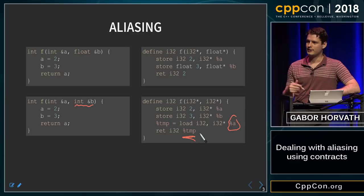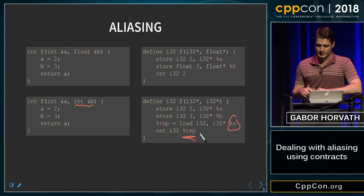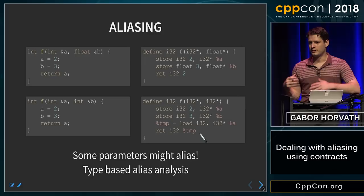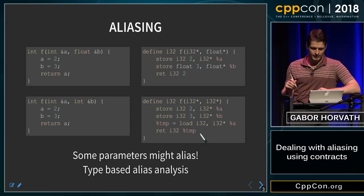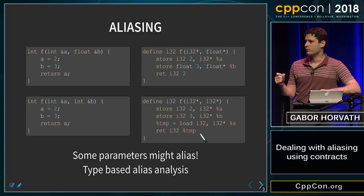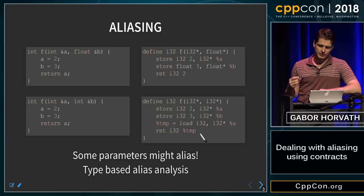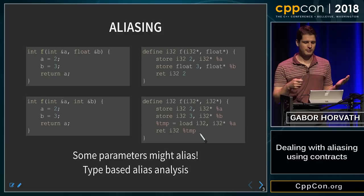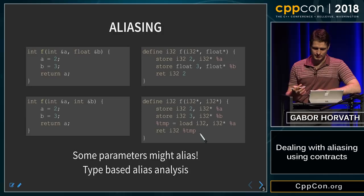There is one more memory operation here. The reason is that the code the compiler generates has to work in circumstances when we pass the same argument twice to this function. In that case, the second assignment will overwrite the memory. Since the parameters might alias, the compiler needs to be conservative. But if the developer already knows that aliasing will never happen and has a way to tell the compiler the absence of aliasing, the compiler could generate more efficient code. One way to do that is to use types — the reason we didn't have that extra load in the first function is because the arguments had different types, and we cannot access the same memory as both integer and float in standard C++. This gave the compiler a hint about the absence of aliasing.